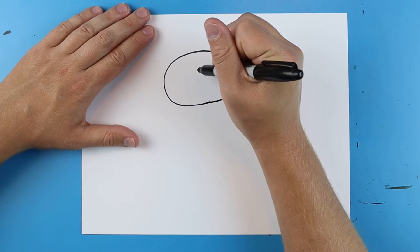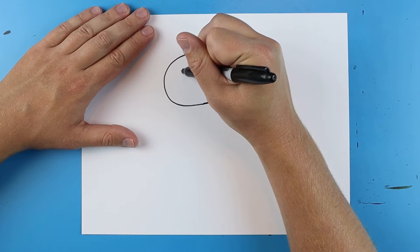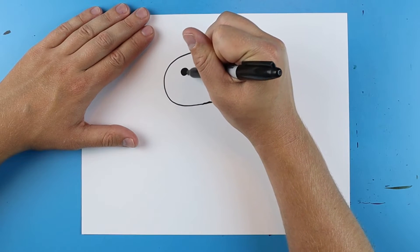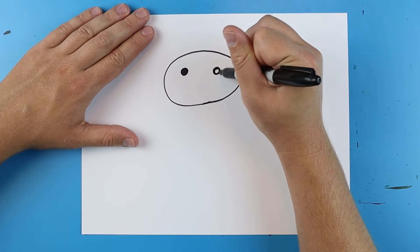Then you're going to add the eyes. So starting right here, I'm just going to add a black dot for one eye and then I'm going to add another black dot for the other eye.